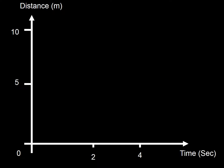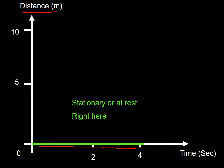Here's another similar-looking graph. Again we're looking at distance, and there's just one line along the bottom. That tells us something is stationary — at rest, not moving — right here at zero meters away.